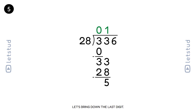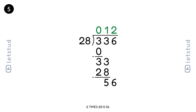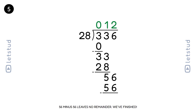Let's bring down the last digit. We have 56. How many times does 28 fit into 56? It fits 2 times. We brought down the 6, making it 56. 28 fits into 56 exactly 2 times. 2 times 28 is 56. 56 minus 56 leaves no remainder.